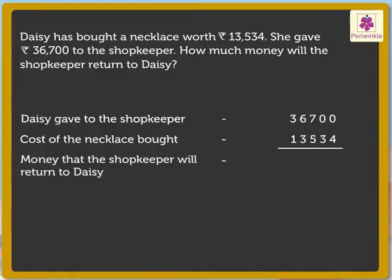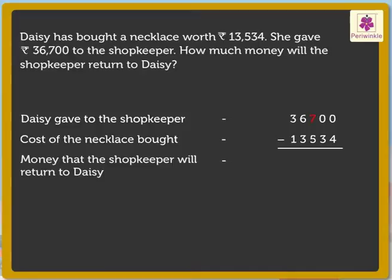Here, we have to subtract 13,534 from 36,700. We cannot subtract 4 and 3 from the 0s in the minuend. So, we will regroup the 100s as there are not enough 1s and 10s. Thus, 700 is regrouped as 600 plus 9 tens plus 10 ones. Now, subtract the ones: 10 minus 4 is equal to 6.